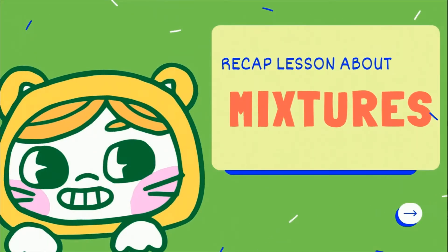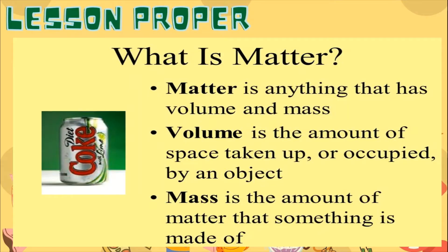Now we're going to have a lesson about mixtures. First, what is matter? Matter is anything that has volume and mass. Volume is the amount of space taken up or occupied by an object. Mass is the amount of matter that something is made of.